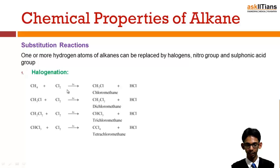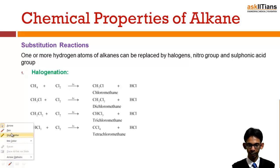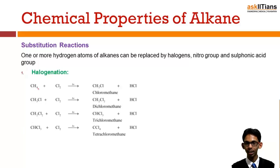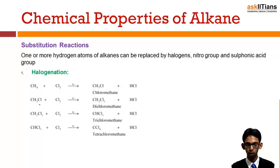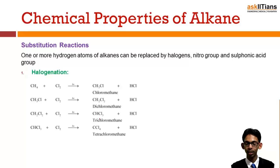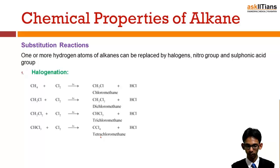Halogenation of alkanes takes place in the presence of sunlight, and it is actually a chain reaction. Methane reacts with chlorine to form chloromethane, and the reaction does not stop there — chloromethane further reacts with chlorine to form dichloromethane, which further reacts to form trichloromethane, and the reaction continues until tetrachloromethane is formed.